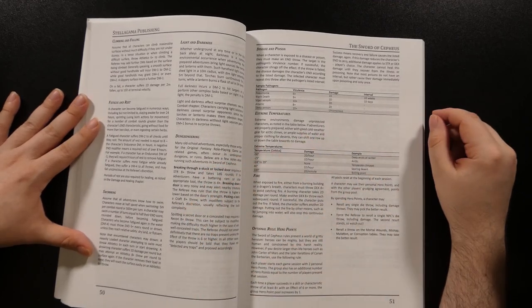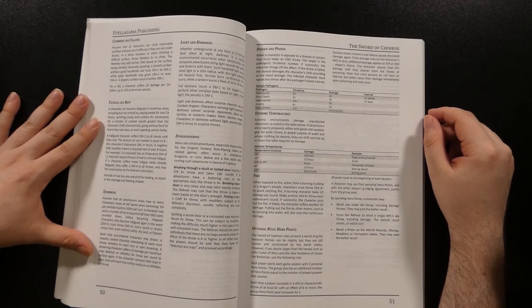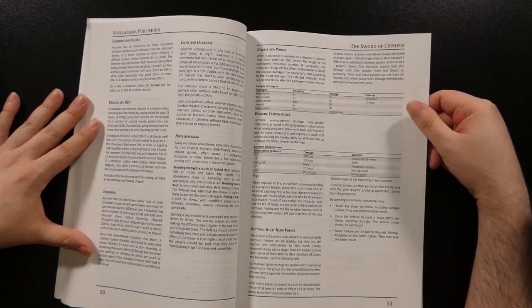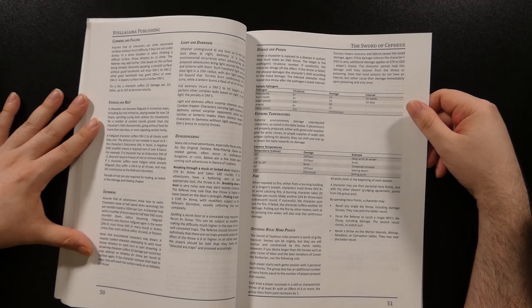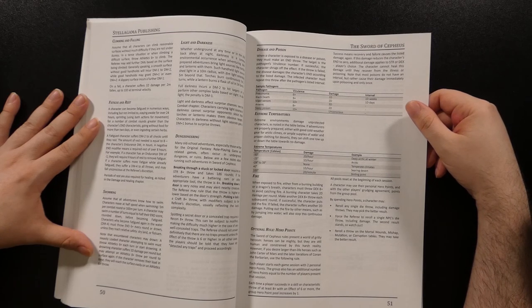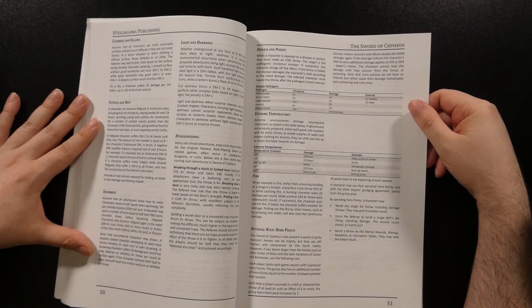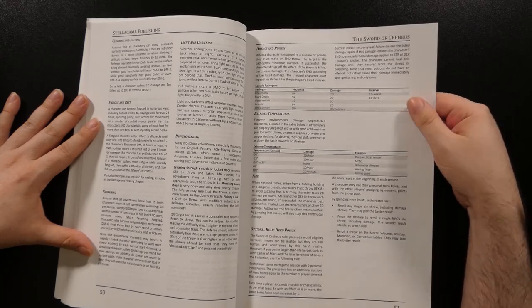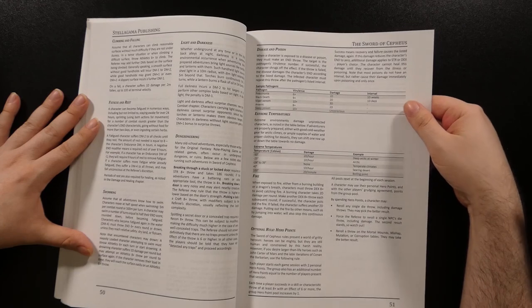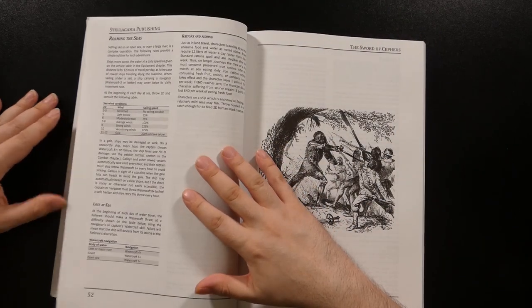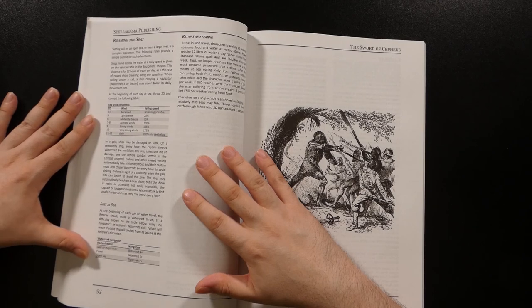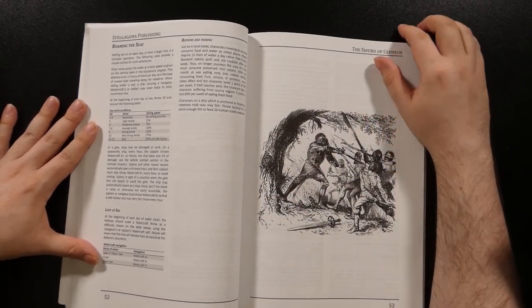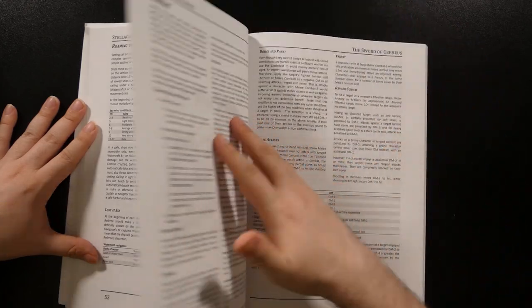Other general adventuring rules that would come up in an OSR style hex crawl are here as well, such as climbing and the natural result of it, falling, rules for becoming fatigued and resting, swimming, dealing with various lighting conditions, breaking through doors, and so forth. There's some examples of diseases and poisons that a character can run into, as well as the effects of various temperatures and fire damage, and an optional hero point system for when Cepheus Engine characters might just be a little bit too fragile for a genre-appropriate game. The chapter concludes with a page of material for naval travel.